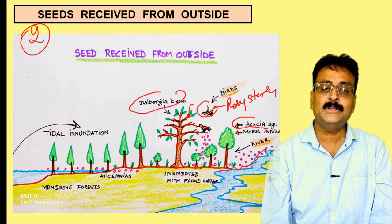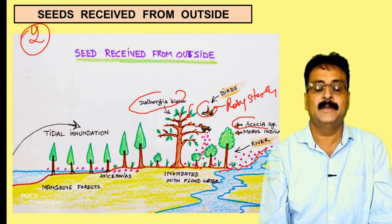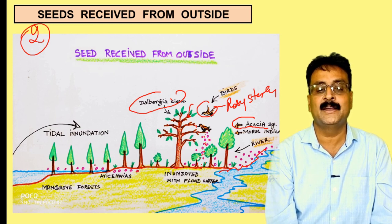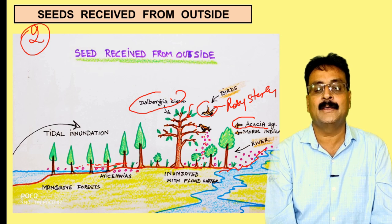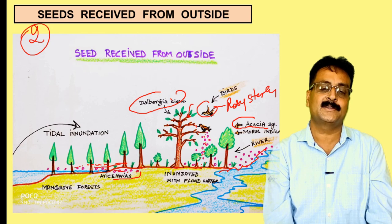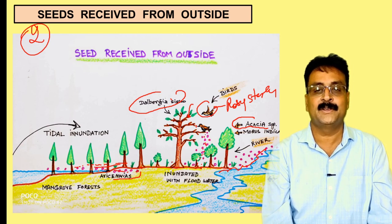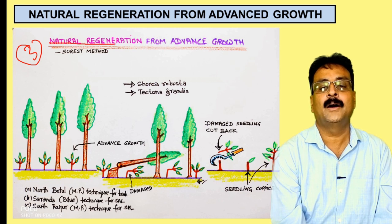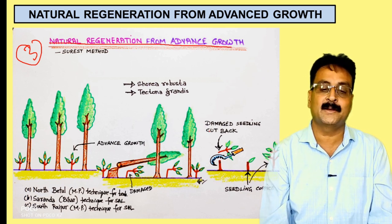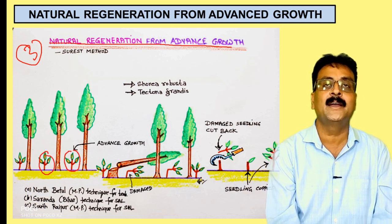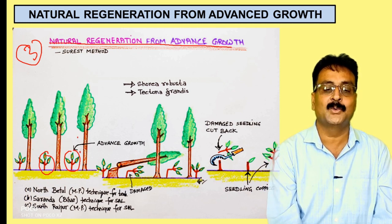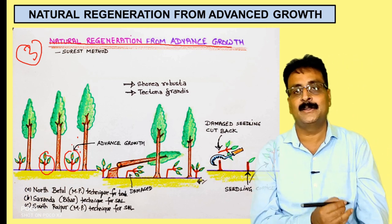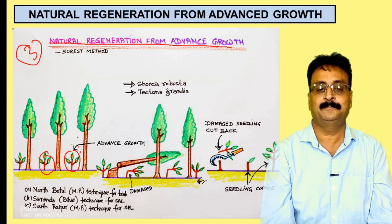In India, an example of seed received from outside is Avicennia, a mangrove species in tidal inundation zones along coastal areas of Andhra Pradesh. As the tide recedes, Avicennia seeds germinate. The third and surest method is natural regeneration from advanced growth — seedlings that have already germinated and are in the sapling stage under the shade of mature trees. This is the surest method because regeneration is already established.